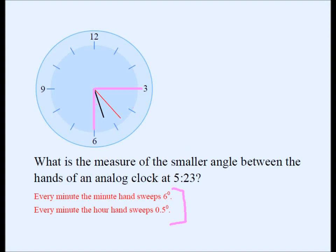We know that the angle between the two pink rays is 90 degrees. If we can find the red angle and the green angle and subtract both from 90, we have our answer. The minute hand moved 8 minutes past the 3 — it was at 15 minutes, then moved 8 more. The minute hand sweeps 6 degrees per minute, so in 8 minutes it sweeps 6 times 8 = 48 degrees. So the red angle is 48 degrees.